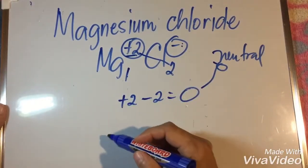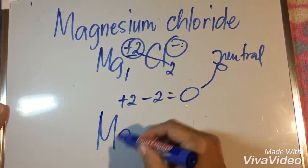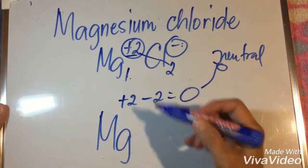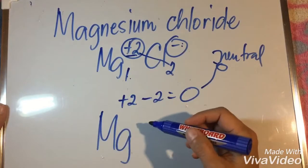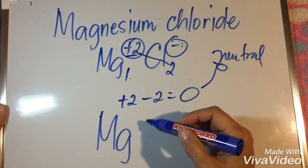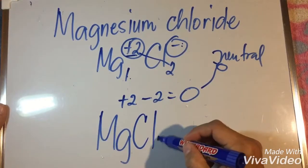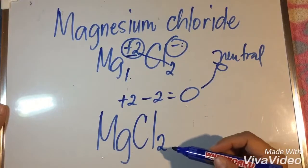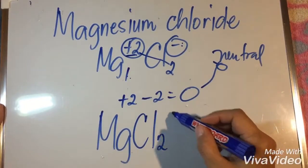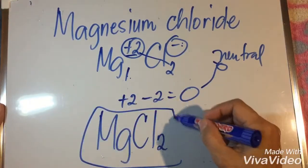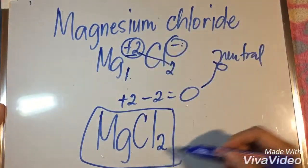To finalize the formula, we have magnesium having a subscript of one—or if it is one, you have to disregard the number—and then chlorine with the subscript of two. This is now the chemical formula of magnesium chloride.